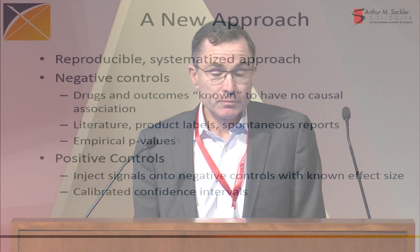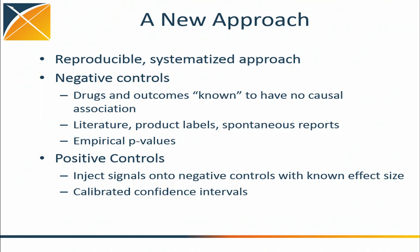Even if we could reproduce them, we have a problem — because they can't both be right. Reproducibility is a significant problem in observational studies as it is in randomized trials, but it is only one of many different problems. We need a new approach — an approach that is reproducible, systematized, that gets the human out of the loop in designing these studies. Crucially, I would argue we have to embrace the concept of negative controls and positive controls.